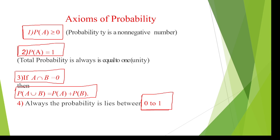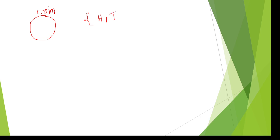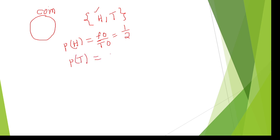I will now explain the first axiom. Consider a coin — a coin has two outcomes. The probability to get head equals favorable outcomes divided by total number of outcomes, so probability of head is one out of two outcomes. Similarly, probability of getting tail equals favorable outcomes, which is one, divided by two outcomes.